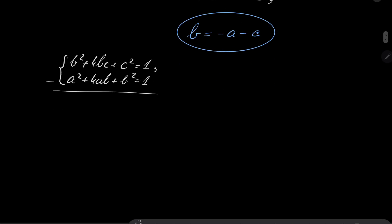So I have, let's take a look, b² minus b² is 0. So we have c² - a² + 4bc - 4ab, 1 minus 1 is 0.